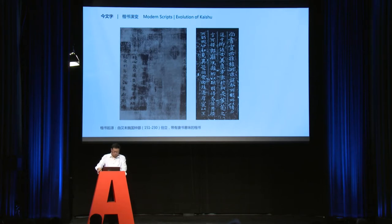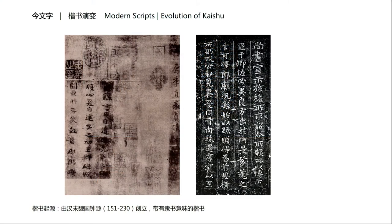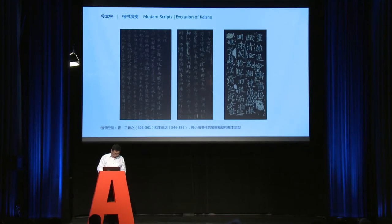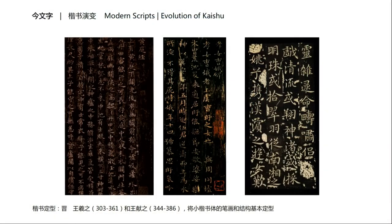Now I will show the evolution of Kai Shu. The origin of Kai Shu is founded by Zhong You in the Wei dynasty. It still has a little Li Shu influence. Wang Xizhi and Wang Xianzhi — they are father and son — finalized the stroke and the basic structure of Kai Shu.